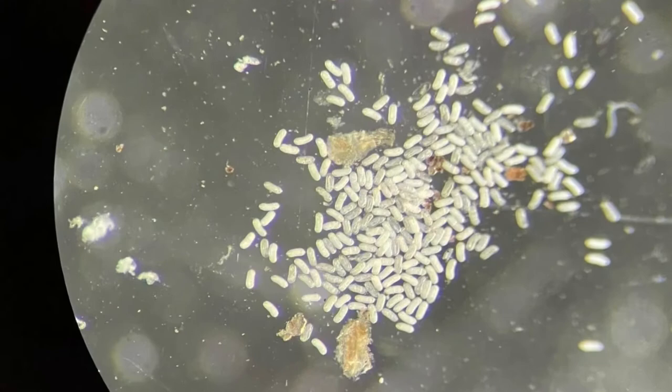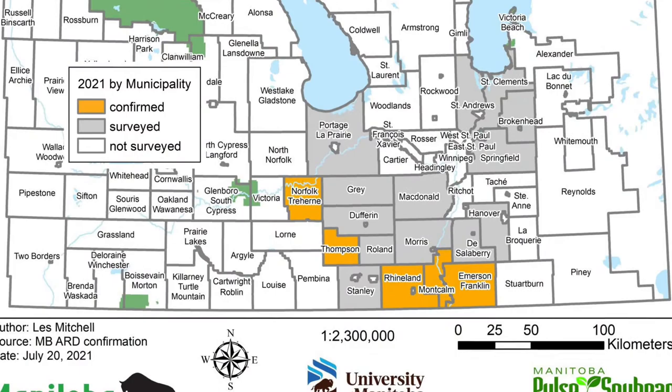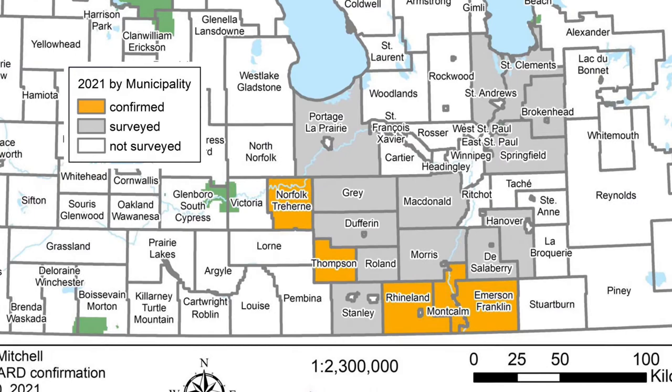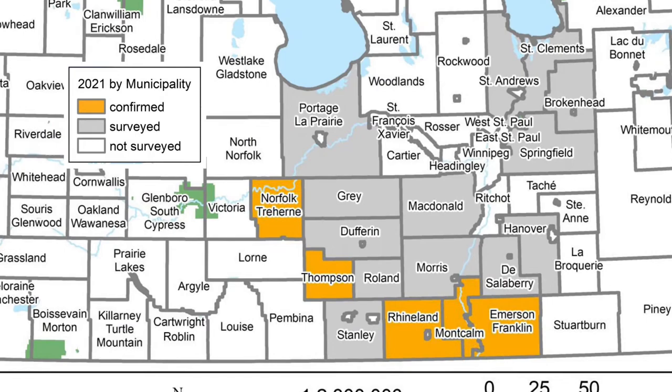Since it's such a damaging pest, surveys for SCN have been conducted in Manitoba since 2012. It was first confirmed here in 2019 by Dr. Mario Tenuta's lab at the U of M and was found in four RMs. Since then we've also added another RM, so we have five confirmed RMs.